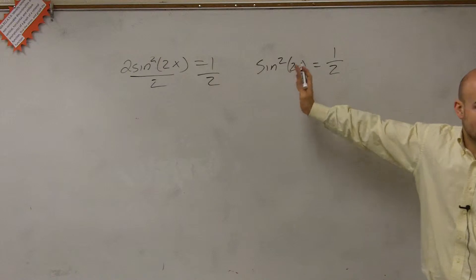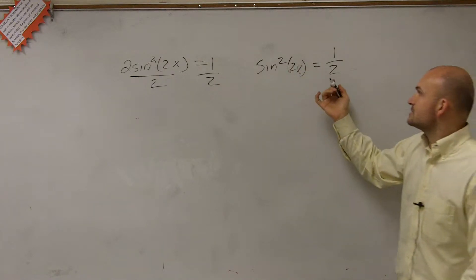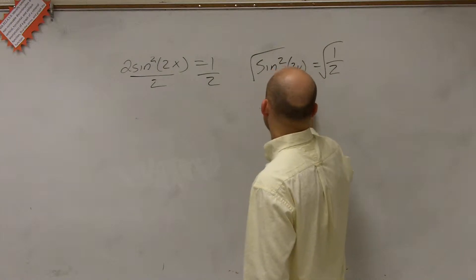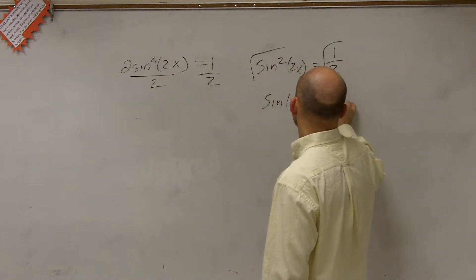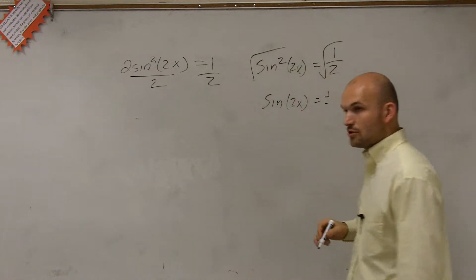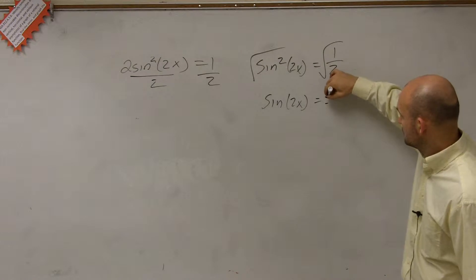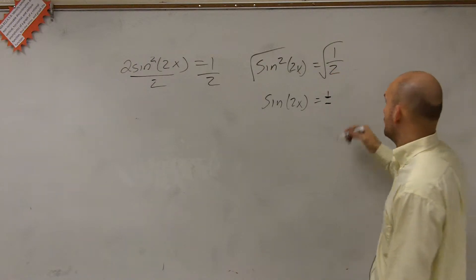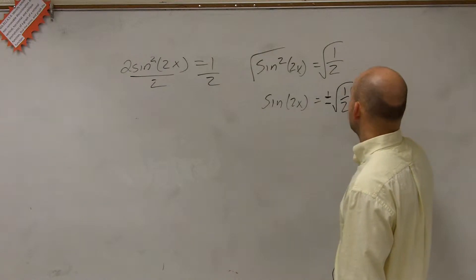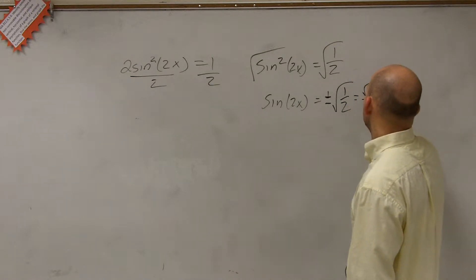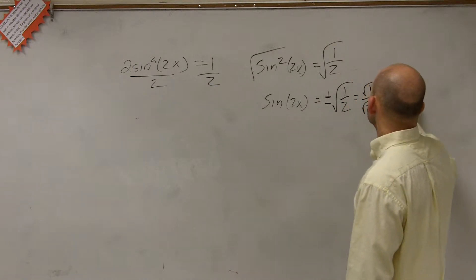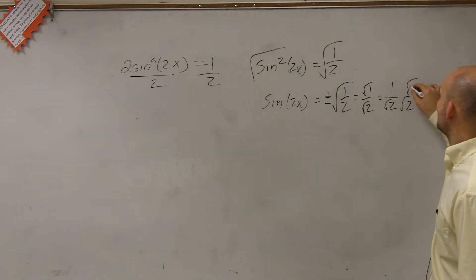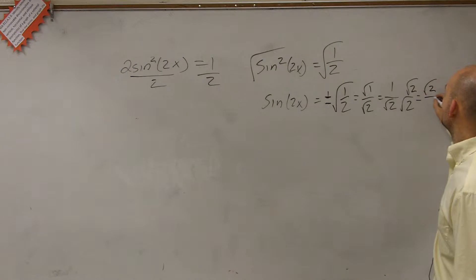Now, we have to make sure we get sine — we're evaluating for the sine, so we're going to square root. And therefore, we get sine of 2x is equal to plus or minus the square root of 1 half. The square root of 1 half is equal to the square root of 1 over the square root of 2, which is equal to 1 over the square root of 2. Now I rationalize my denominator.